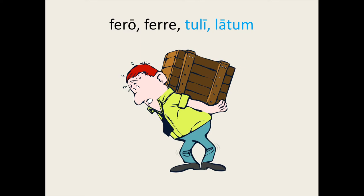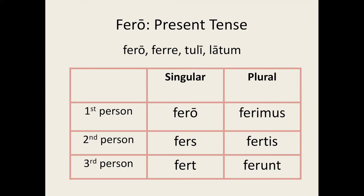Let's conjugate this verb in the present tense. Fero — 'I carry'; fers — 'you (singular) carry'; fert — 'he, she, it carries'; ferimus — 'we carry'; fertis — 'you (plural) carry'; and ferunt — 'they carry.'